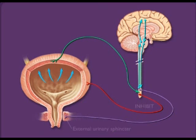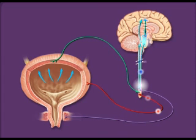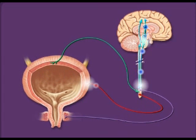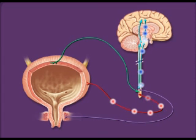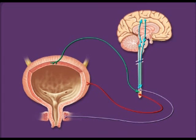When urination is desired, signals from the brain stimulate the micturition reflex. The brain also decreases action potentials in the somatic motor neurons to relax the external urinary sphincter.